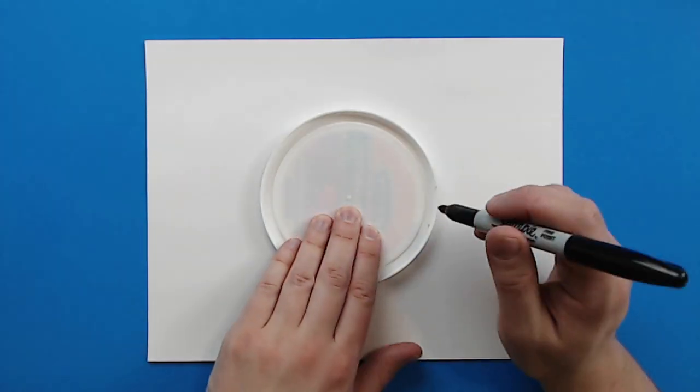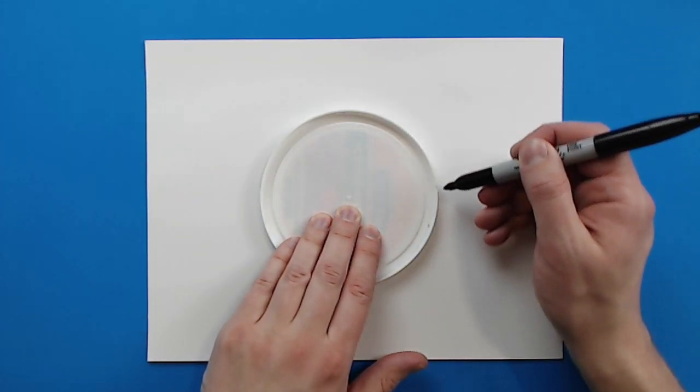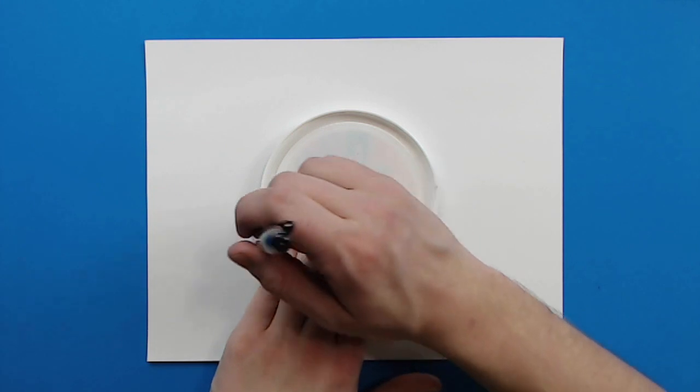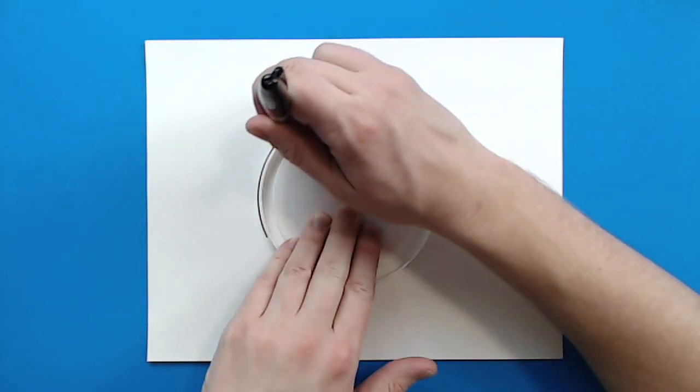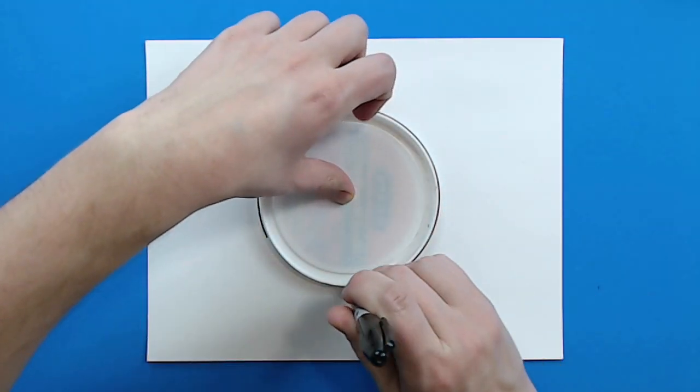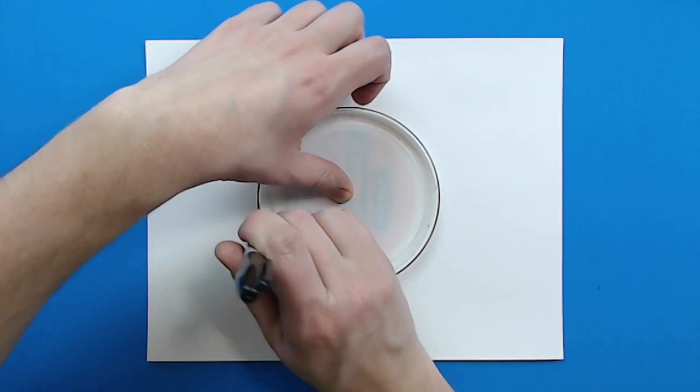And you want to trace around this. Now when you trace, you don't want to have your pen or pencil at an angle. You want to have it straight up and down. So I'm just going to keep my pen straight up and down and I'm just going to draw a nice circle shape that goes all the way around.